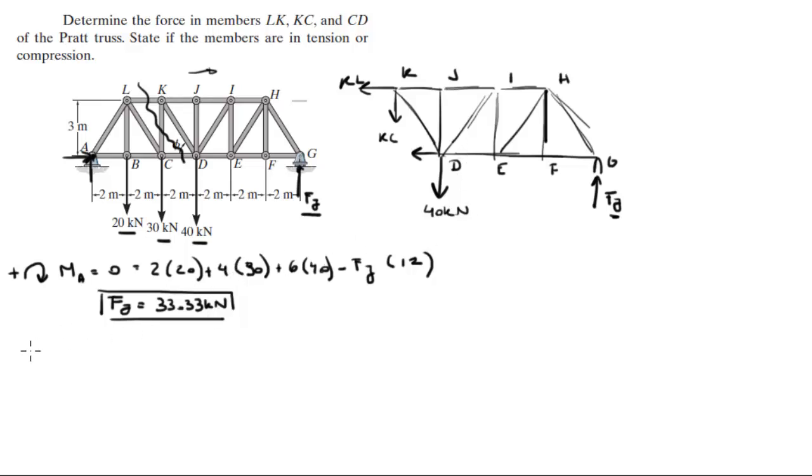Now that you have Fy, you can do the sum of the forces in the y is equal to 0, and you know that minus Kc minus 40 plus Fy, which is found, is equal to 0. So, when you solve for Kc, you get that it's equal to negative 6.67.